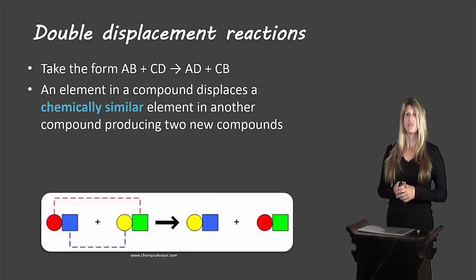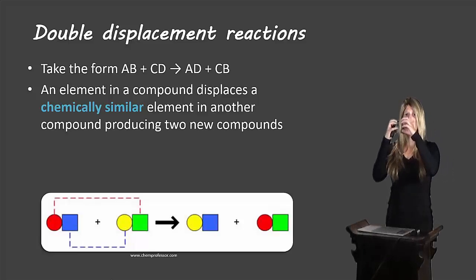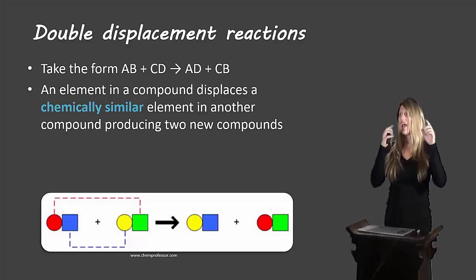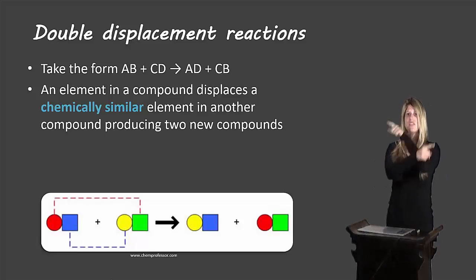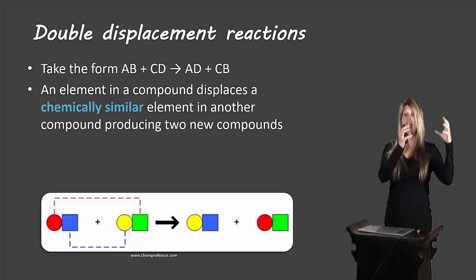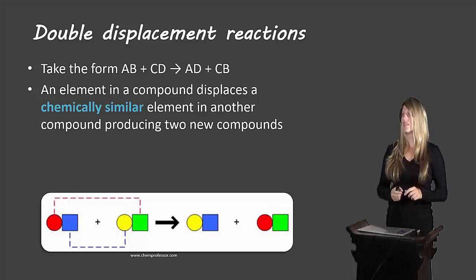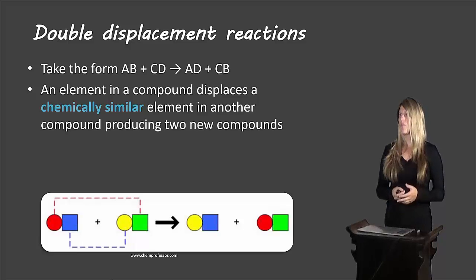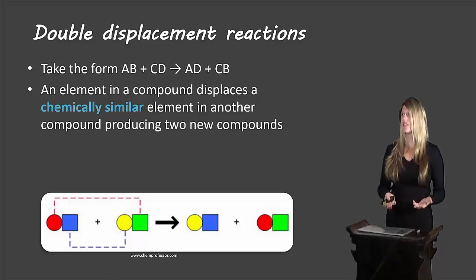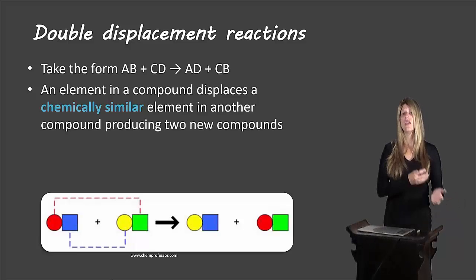Let's take a look at our double displacement reactions. They take the form AB, a compound, plus CD, a second compound. Now B and D are going to swap places. So A is no longer bonded with B — it's now with D. And C is no longer with D — it's now with B. An element in a compound displaces a chemically similar element in another compound to produce two new compounds.